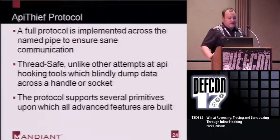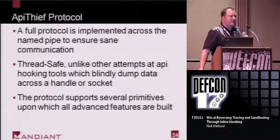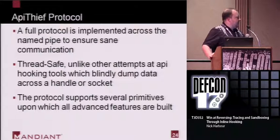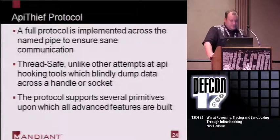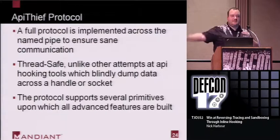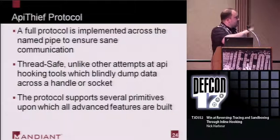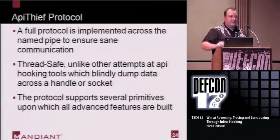API Thief has a full protocol. Currently I'm using named pipes to communicate back to the GUI — that could be sockets in the future. There's a persistent thread running in the target process for communications, so you don't have to wait for a hooked function to be called to interact with the process — you can request a list of loaded modules or install a new hook at any time. iDefense had a tool called API Logger that did something similar but blindly kicked data over a socket back to the GUI and wasn't thread safe, so with multiple threads you'd get garbled overlapping data. By implementing a proper protocol that's thread safe, you get clean output every time.